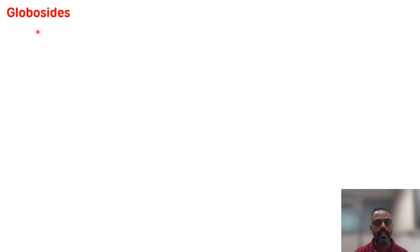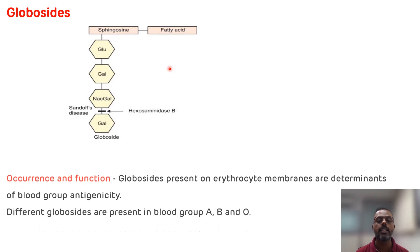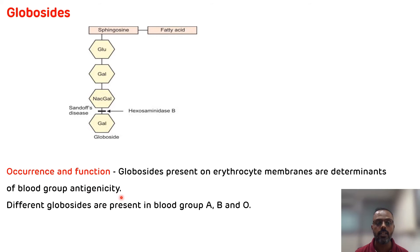The third glycolipid is globosides. The composition of globosides includes fatty acid, sphingosine as an alcohol, and different sugar units. Globosides are present on the outer surface of red blood cells (RBCs), and their structure determines blood group antigenicity. Different globosides are present in blood groups A, B, and O — so they play an important role in determining blood group antigenicity.